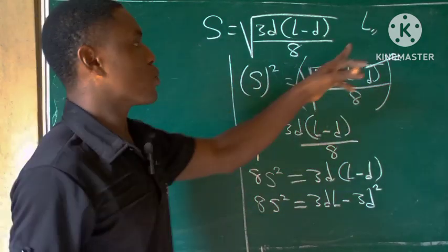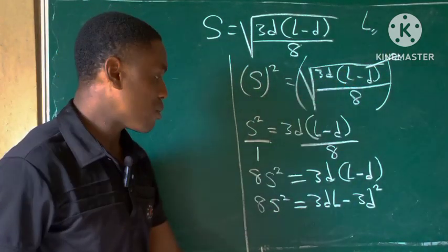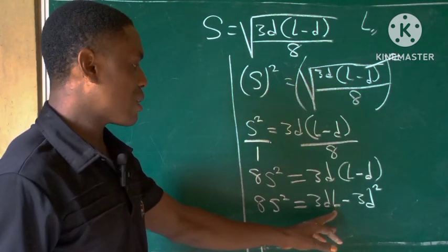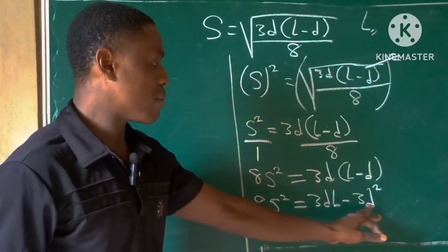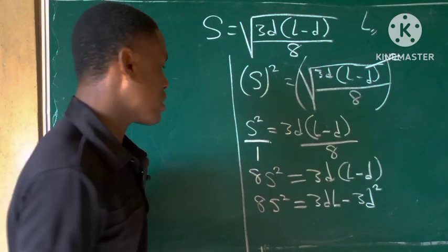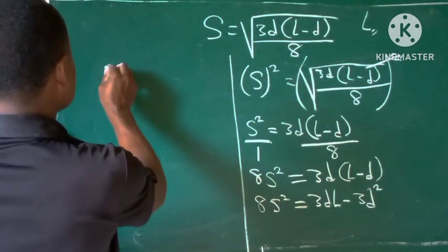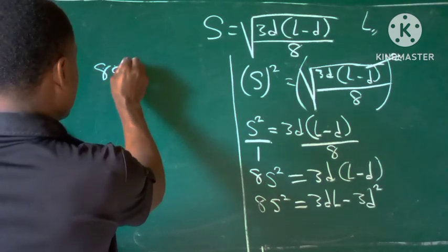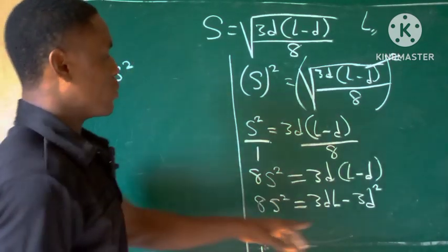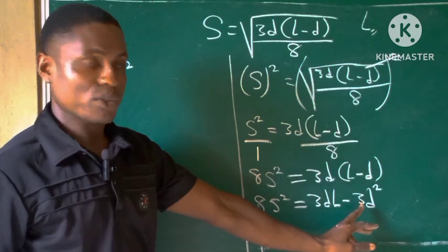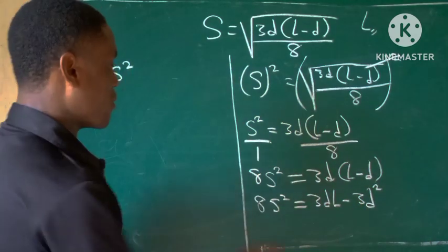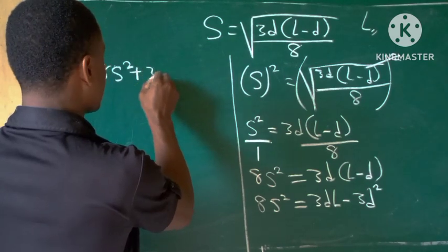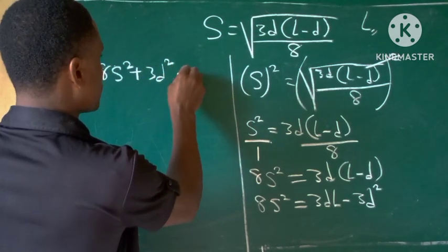From the question we are asked to make l the subject of the formula. So let's make 3dl stand alone by moving minus 3d squared to our left side. So we have 8s squared, it will change to positive 3d squared when moved to the left side, plus 3d squared equal to 3dl.